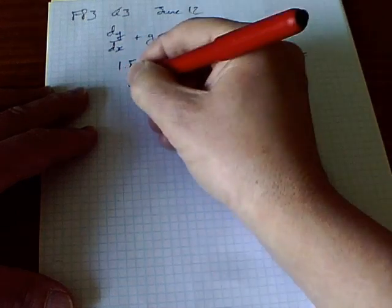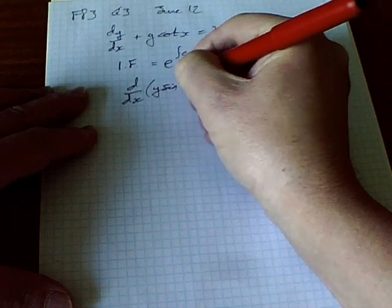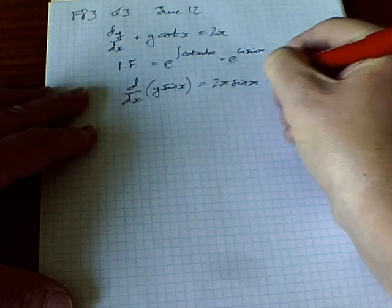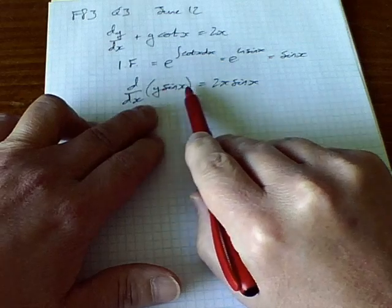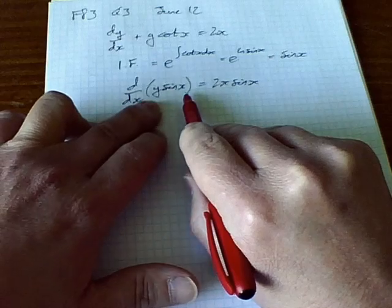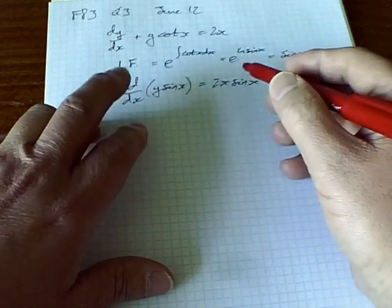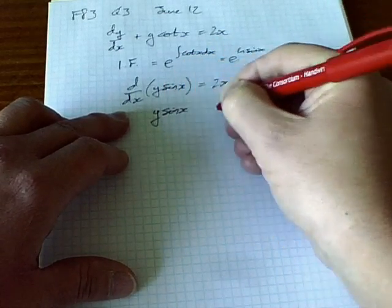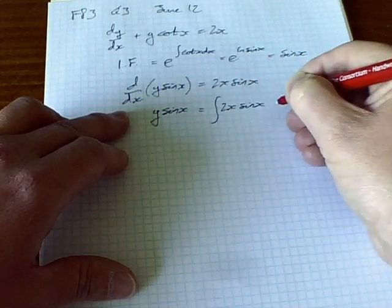What I'm now allowed to write is that d/dx of y sin x equals 2x sin x. That's by the miracle of the integrating factor enabling a relatively complex differential equation to become the derivative of a product, which is going to be relatively easy to solve. Integrating both sides, I get y sin x equals the integral of 2x sin x dx.